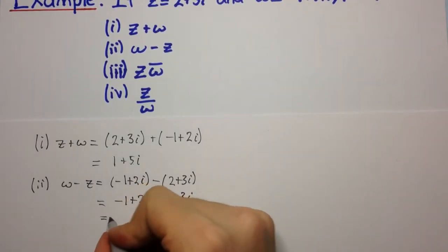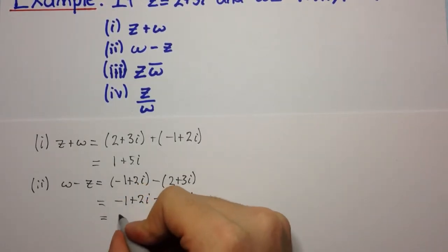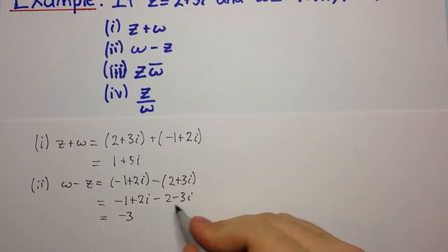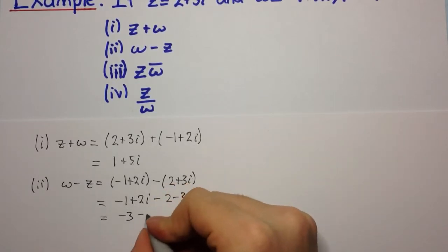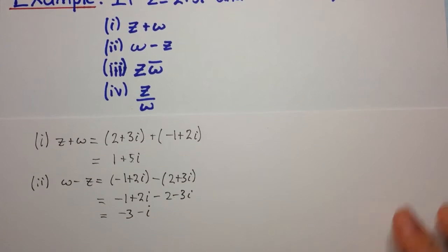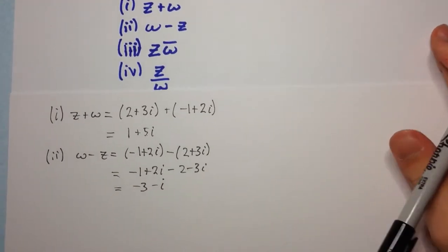We are left with minus 1 minus 2 is minus 3, and 2i minus 3i is minus i. Once again, that one's fairly straightforward as well.